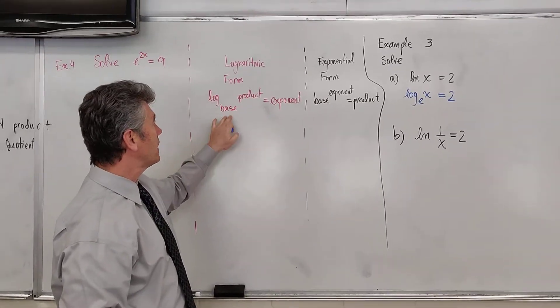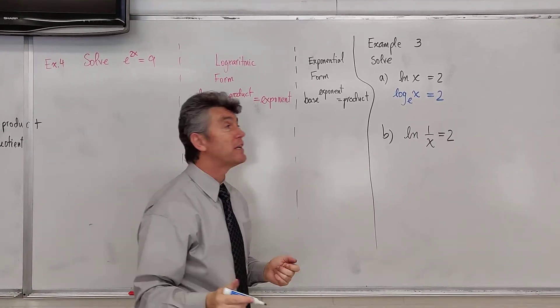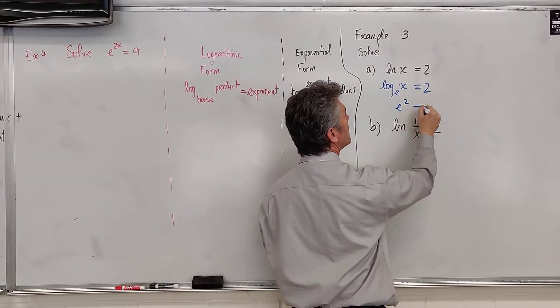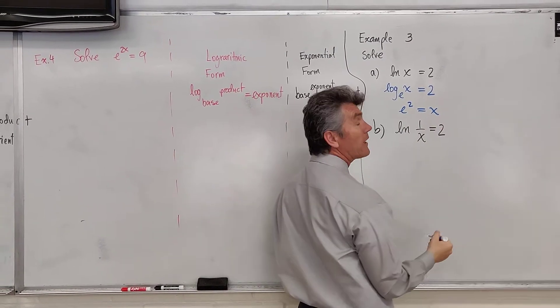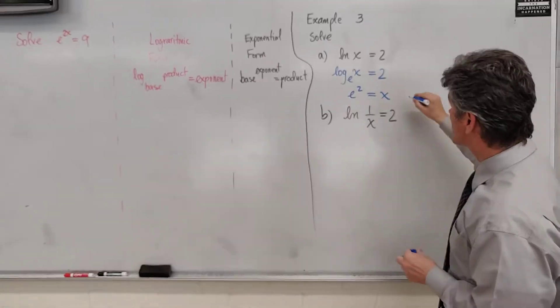You've got now a log, a base, an exponent, and a product. And now change to exponential form. e squared is equal to x. Well, I'd like to tell you that you have to do a long form for it, but the truth is, you don't.